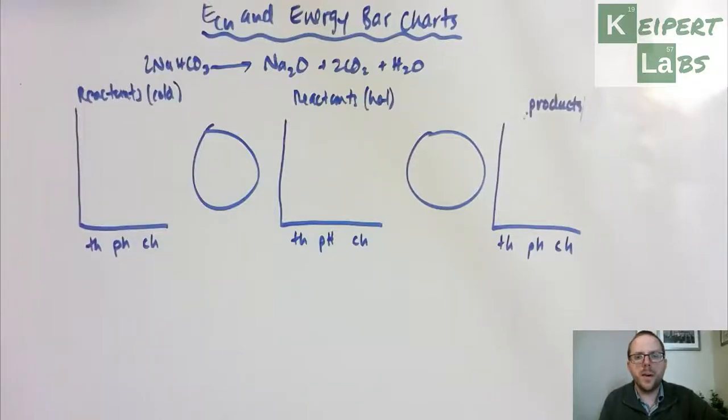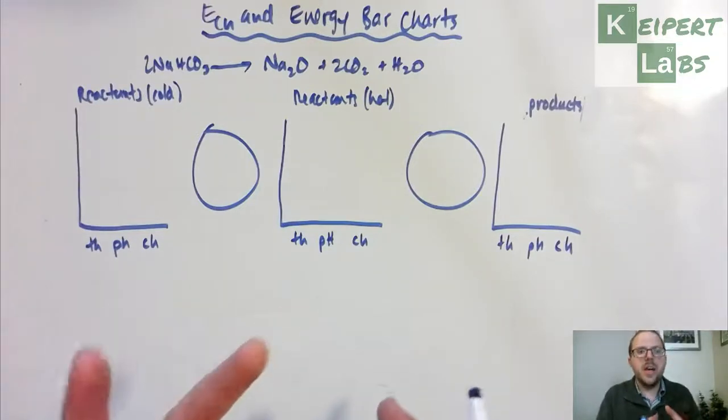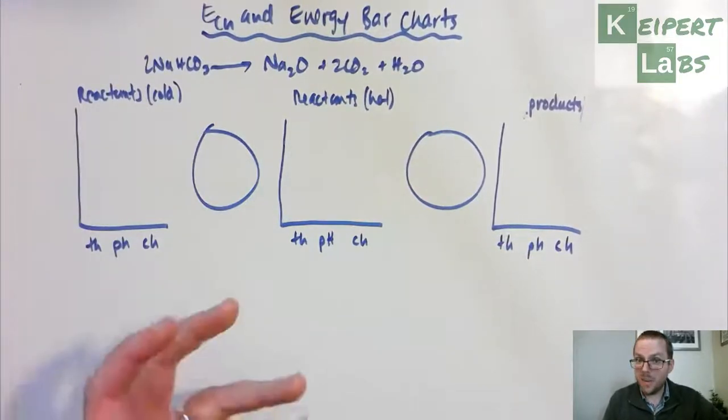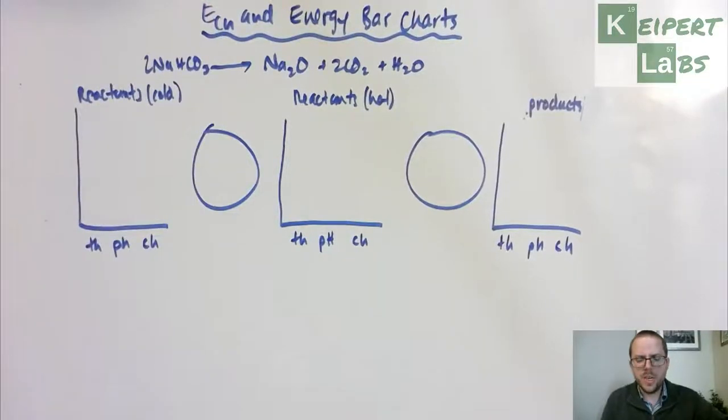Hi everyone, welcome to this episode of Kuipert Labs. In this follow-up video we're going to be talking about the connection between ECH, our chemical potential energy, and our tool of energy bar charts that we've introduced in the previous couple of units ago. We've looked now at this idea of what chemical potential energy is and how it relates to chemical change, seeing that energy is an important factor in why chemical reactions do or don't happen. And now we're going to use energy bar charts to try and represent that change a little better.